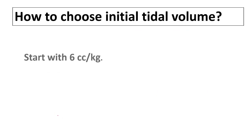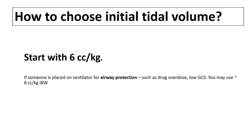When choosing initial tidal volumes, we always start with 6 cc per kg and follow a low tidal volume ventilation strategy. However, in certain cases like drug overdose or low GCS, you may use 8 cc per kg. Anesthesia sometimes uses 8 to 10 cc per kg in elective surgeries.